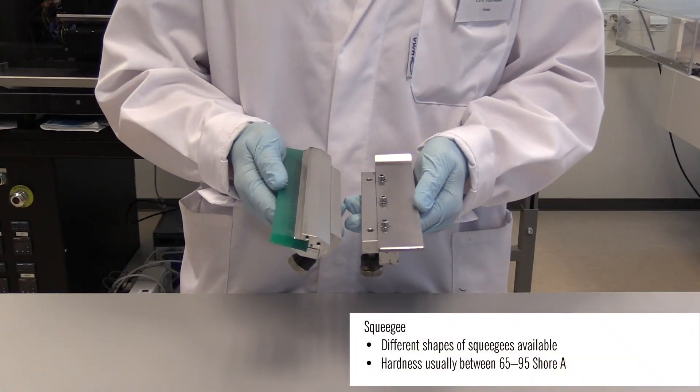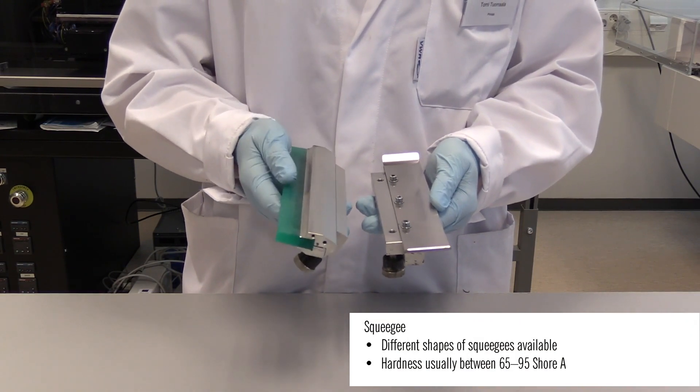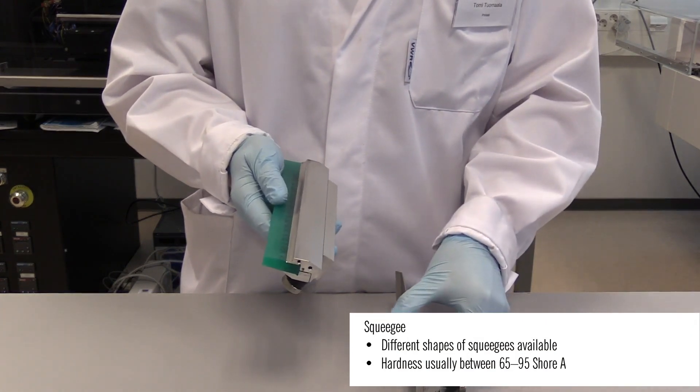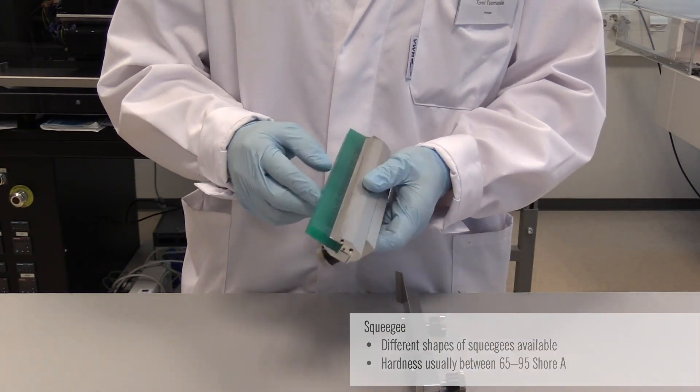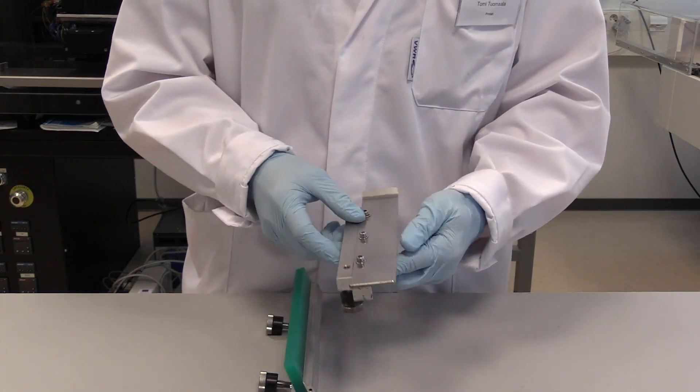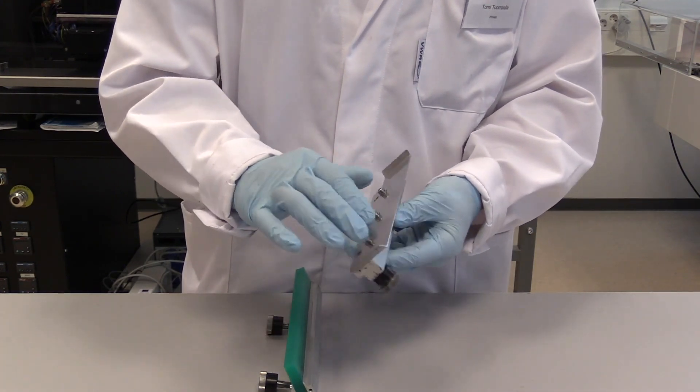Seuraavaksi tarkistetaan painolastan eli squeegeen kunto ja värilevittimen kunto. Squeegeen tulee olla terävä ja ehjä. Värilevitin tulee olla myös ehjä.